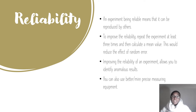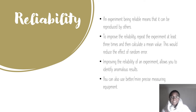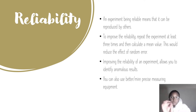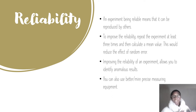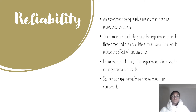Reliability means that the experiment can be reproduced by others. To improve reliability, you should repeat the experiment at least three times and then calculate a mean value. Whenever a question asks how to improve reliability, just put: repeat the experiment and calculate a mean value. Examiners will love that — you'll get the marks. The reason you do this is to reduce the effects of random error.